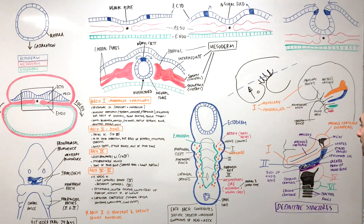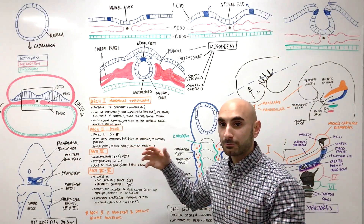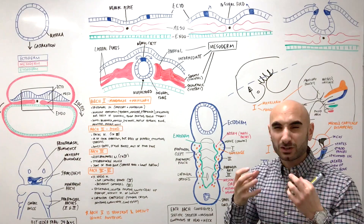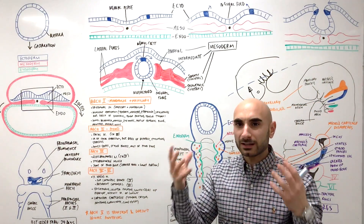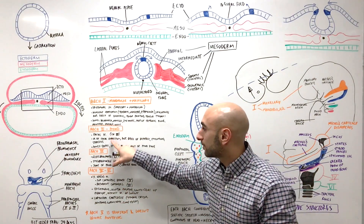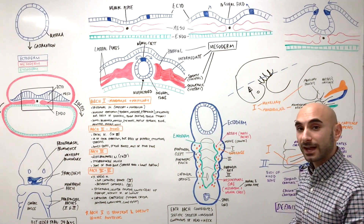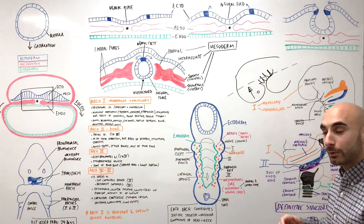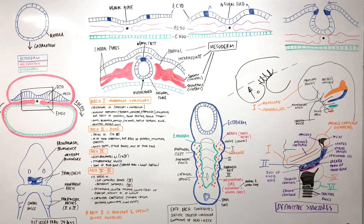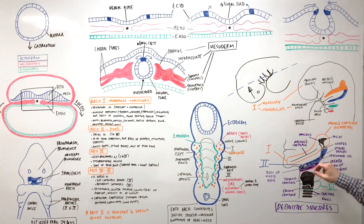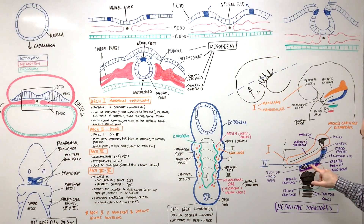Pharyngeal arch number two is color-coded in blue. In terms of muscles, it gives the muscles of facial expression — the facial nerve innervates the muscles of facial expression, which is an easy way to remember it. It also gives the posterior belly of the digastric, the stylohyoid, and the stapedius. In terms of bones, it gives the stapes, the styloid process, and most of the hyoid bone — specifically the top portion of the hyoid as well as the stylohyoid ligament.